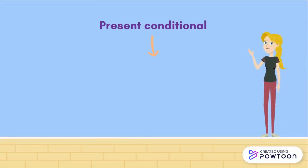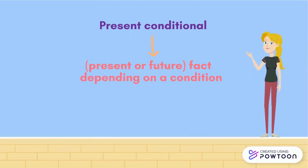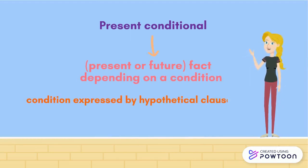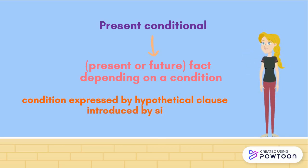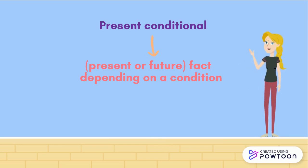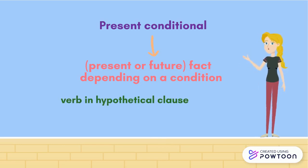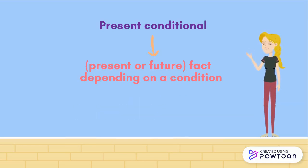It generally expresses a present or future fact, depending on a condition. This condition is expressed by a hypothetical clause that is often introduced by the conjunction 'si', meaning 'if'. With the present conditional, the verb in the hypothetical clause is usually conjugated in the imperfect indicative. The present conditional corresponds to 'would' plus infinitive.